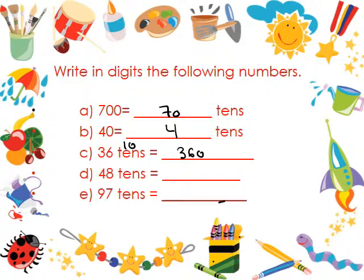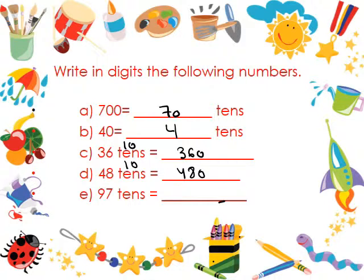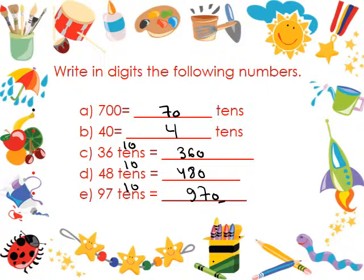48 tens is equal to what? 480. Because 48 times 10 is equal to 480. 97 tens: 97 times 10 is equal to 970.